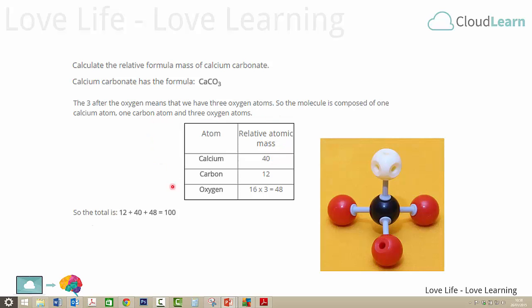Now have a look at the table here in the middle. This table contains the atomic masses of each of these elements as taken from the periodic table. So calcium has an atomic mass of 40, carbon is 12, and oxygen is 16 but there's three of those so we multiply that by three to get 48. Then it's a simple case of adding all these numbers together to get 100.